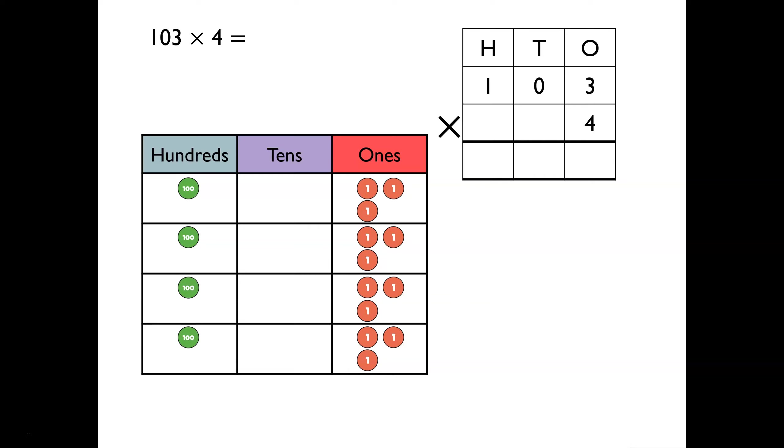We begin again with the ones, where we have 3 ones multiplied by 4, which is equal to 12 ones. We need to exchange 10 of these ones for a ten. Notice on our short multiplication written method, we leave 2 in the ones column and we write 1 in the tens column to show the exchange.